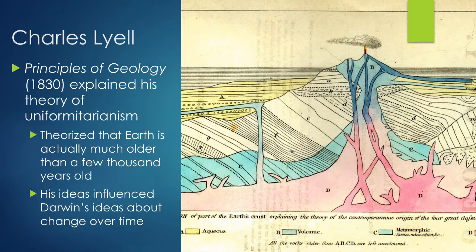Next up we have Charles Lyell. His book was The Principles of Geology, and his idea was uniformitarianism. His ideas were basically that the Earth was much older than previously thought, and that it took much longer to shape the Earth than scholars originally hypothesized. This gave Darwin the reinforcement that Earth was much older than a few thousand years, allowing him to expand on his idea of change over time — because Darwin's ideas about change over time had to have happened over a much longer period than a couple thousand years.